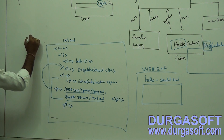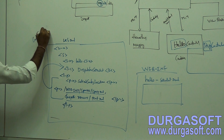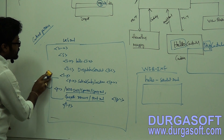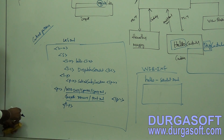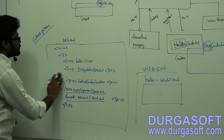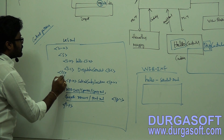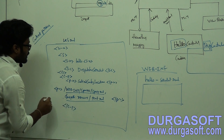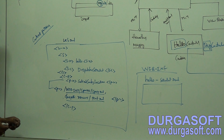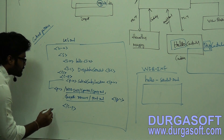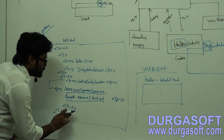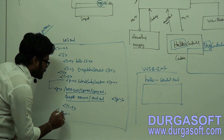You can read XML files by using context parameters also. We can configure context parameters, but in case of context parameters we must need to configure one listener class. Under context parameters we can configure param-name and param-value. To read these context parameters we have to configure a listener, and the listener-class tag is used to load the listener.